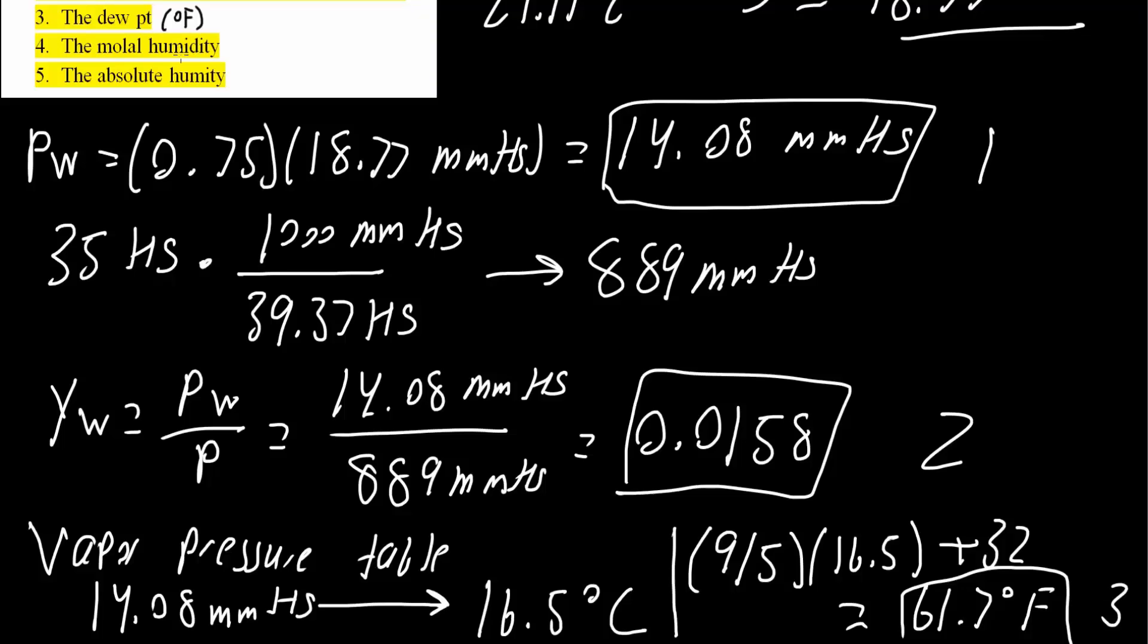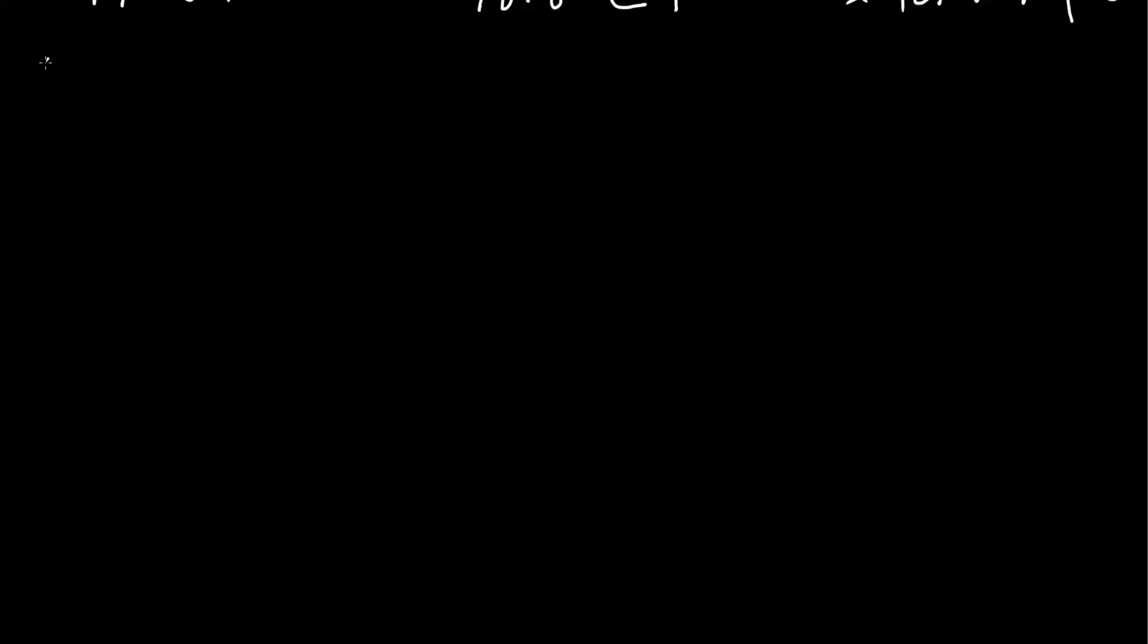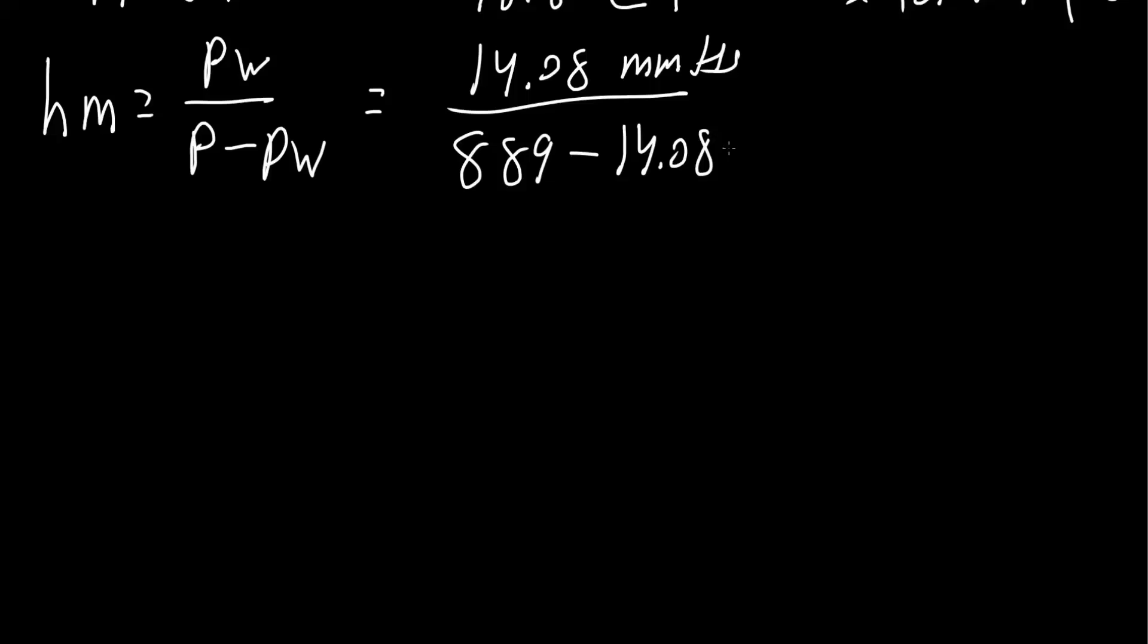Now we have two more: the molal humidity and the absolute humidity. The molal humidity equals Pw divided by P minus Pw. So Pw was 14.08 mg of mercury divided by pressure, which was 889 mg of mercury, minus 14.08 mg of mercury. This equals 0.0161. This is the fourth answer, the molal humidity.